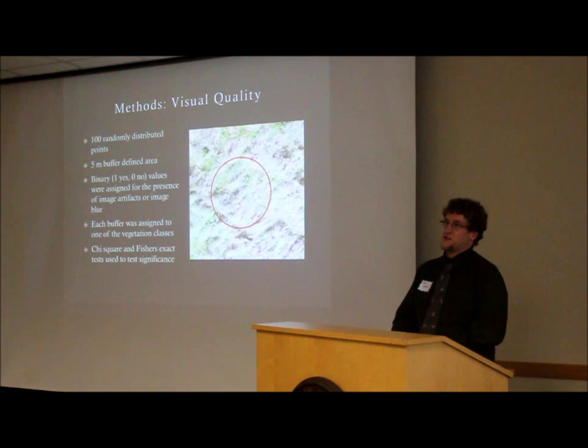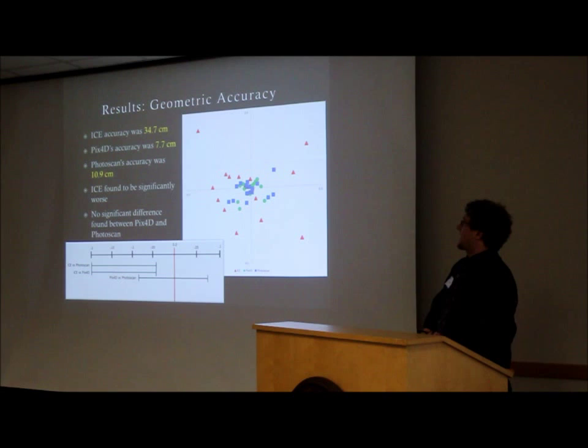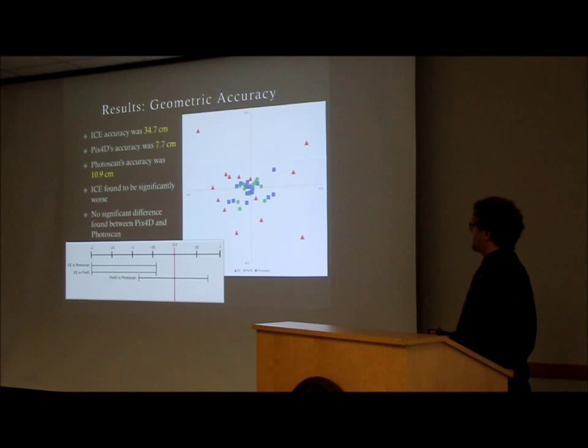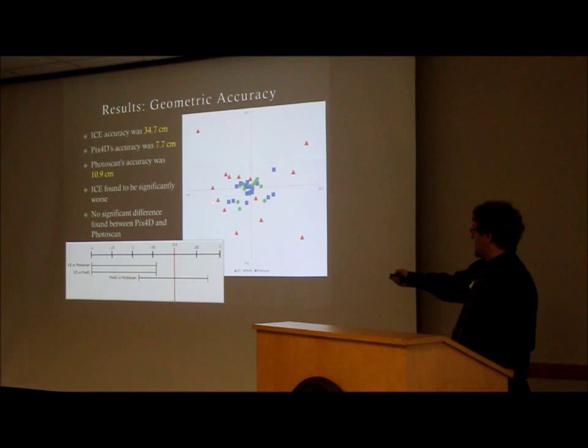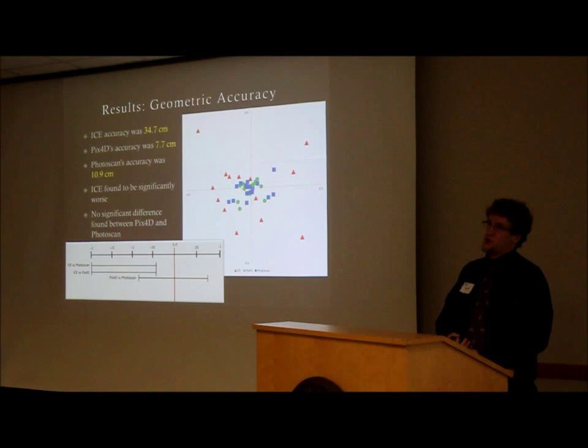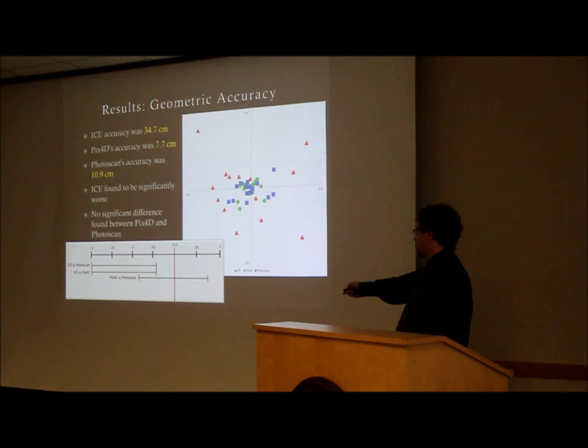For geometric accuracy, Microsoft ICE was statistically the worst with 34.7 centimeter accuracy. Pix4D had 7.7 centimeter accuracy and Photoscan had 10.9 centimeters. However, those two values were not found to be statistically significantly different. As you can see in the graphic, the red triangles for ICE have a significantly wider scatter pattern compared to Pix4D and Photoscan, which are more centered around the origin. The confidence interval for the Pix4D versus Photoscan contrast included zero.